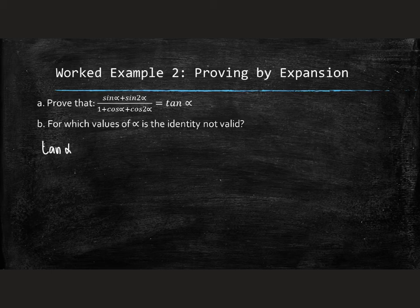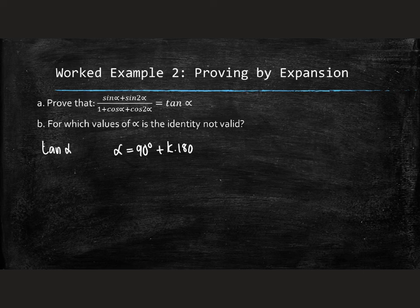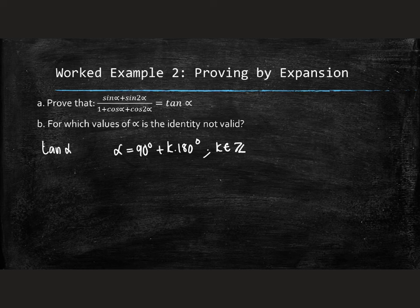It would not be valid if α was equal to 90 degrees, as well as any multiple of that, which in our case, we spoke about using this expression. K in elements of Z. So every 90 degrees and every 180 degrees thereafter, this would not be valid on the right hand side.